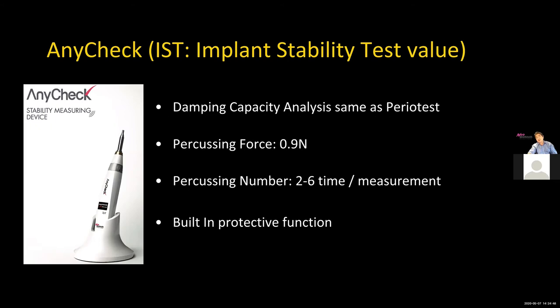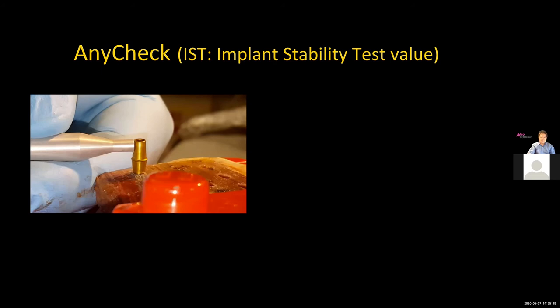Neobiotech, about five years ago, revisited and upgraded damping capacity analysis. The focus-on force was decreased 30%, and the number of hits is now two to six times: if IST is more than 60, it hits six times; if less than 60, only two times. It also has a built-in protective function — if the implant shows dangerous mobility it gives you a warning sign.